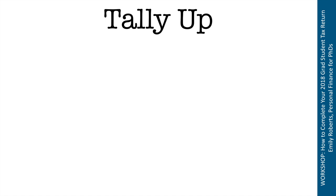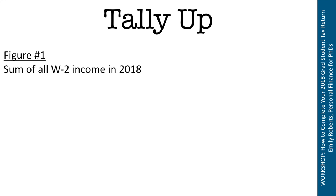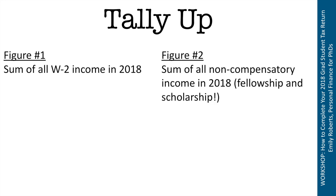Now the last step, which is actually the simple part. I want you to come away with two numbers. Figure one is the sum of all your W-2 income in 2018 — if you only received one W-2, it's just the number in box one. If you had multiple W-2s, add them all together. Figure two is the sum of all non-compensatory income in 2018 — fellowships and scholarships — whether it's reported on a form or you had to go into your student account or bank account to figure it out. I know that number might seem scary large, but stick with me.